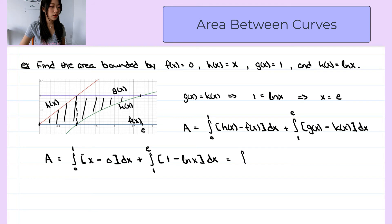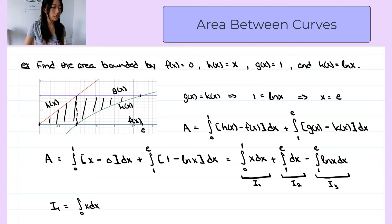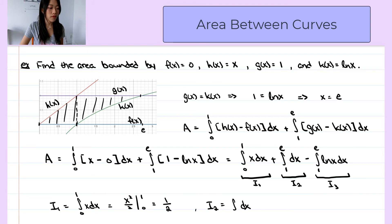This simplifies to the integral of x evaluated from 0 to 1, plus the integral of 1 minus ln of x, evaluated from 1 to e. Let's call the first integral I1, the second integral I2, and the third integral I3. So I1 equals the integral of x from 0 to 1, which equals x squared over 2 evaluated from 0 to 1, which equals 1 over 2. And I2 equals the integral of 1 from 1 to e, which equals e minus 1.